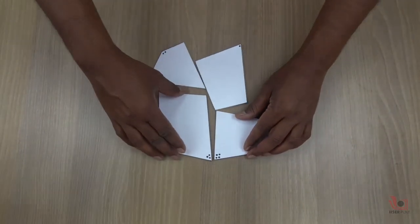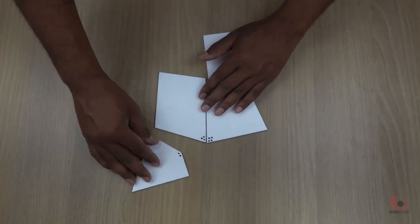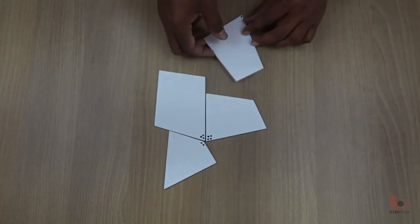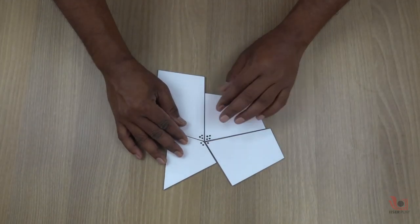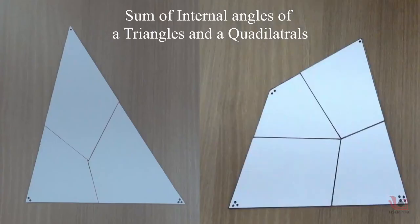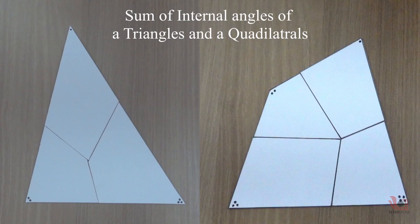Hello friends, today we are going to show you physically how the sum of the internal angles of the triangle is 180 degrees and the sum of the internal angles of the quadrilateral is 360 degrees.